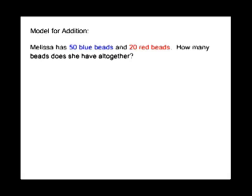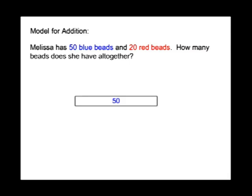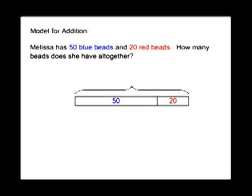In our first example, we're going to use a model for addition. Melissa has 50 blue beads and 20 red beads. How many beads does she have all together? We're going to model the 50 blue beads and also model the 20 red beads. Our equation is 50 plus 20 equals 70.